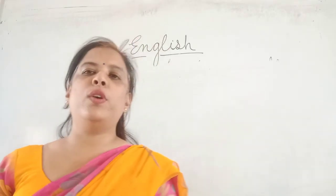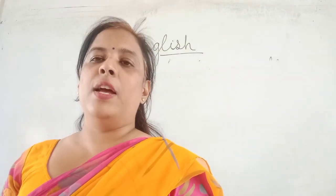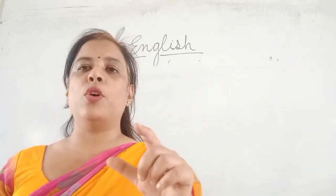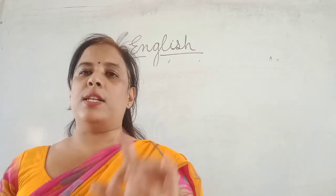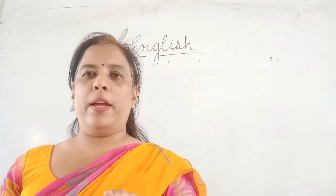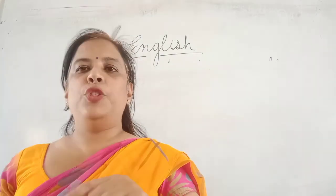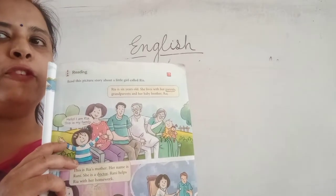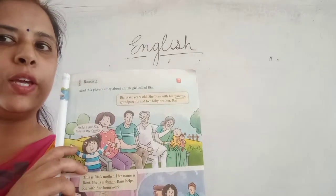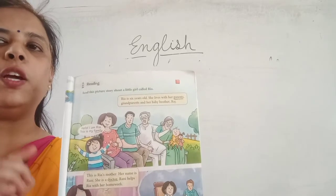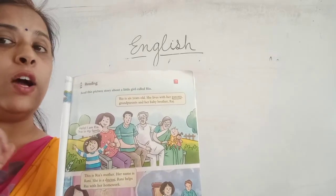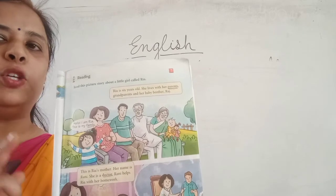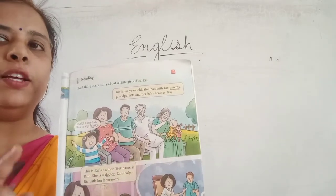Okay students, these words will help you to read the lesson about Ria's family. These words will help you to read the lesson up to where we have read. Because today's homework is only reading. Today's homework is only reading. Now I am reading a line and you will repeat after me. I am not explaining the lesson; I am only focusing on reading in this video, because I have already explained this lesson. Today we are only reading. Okay.